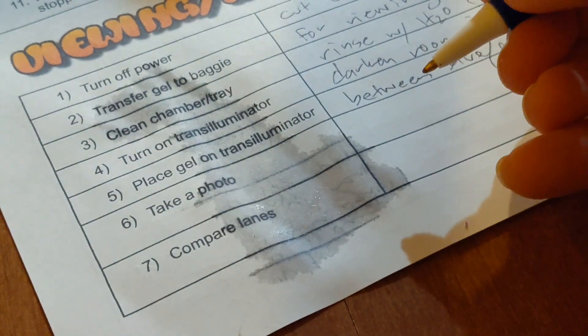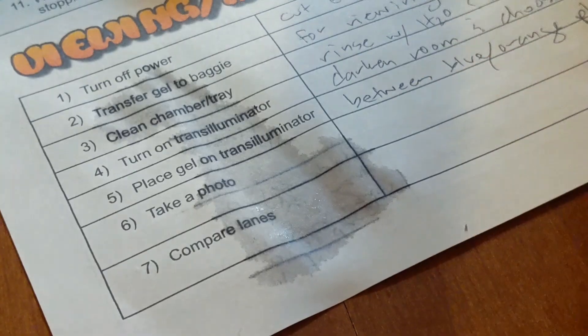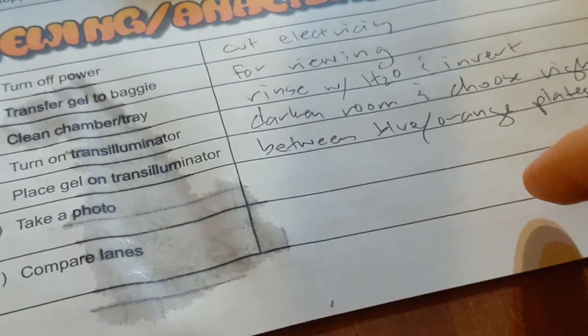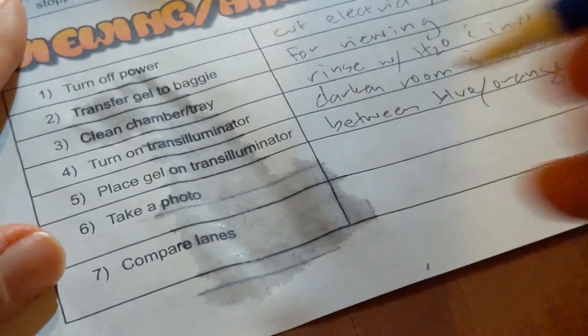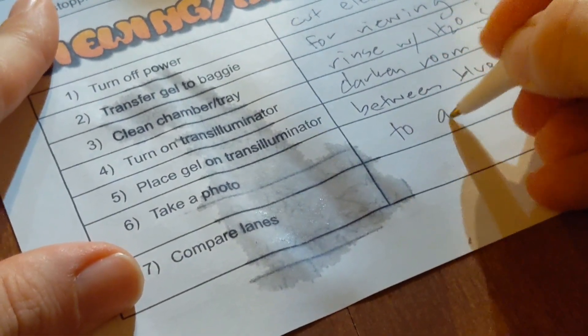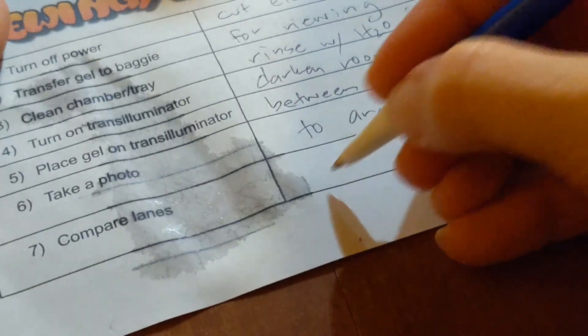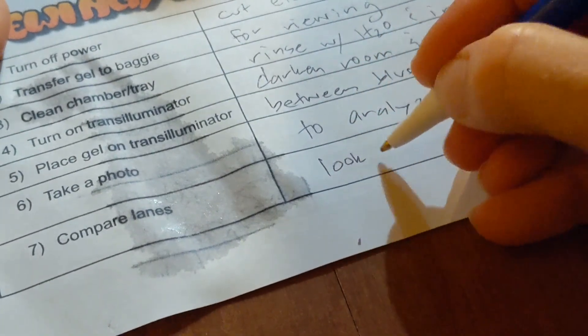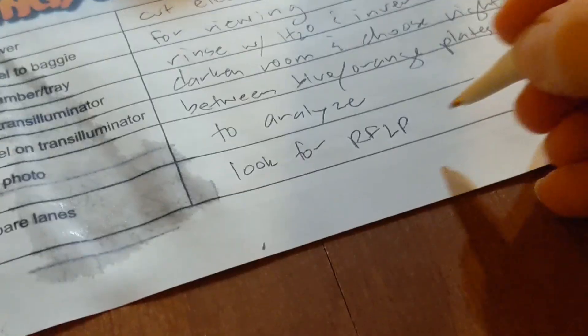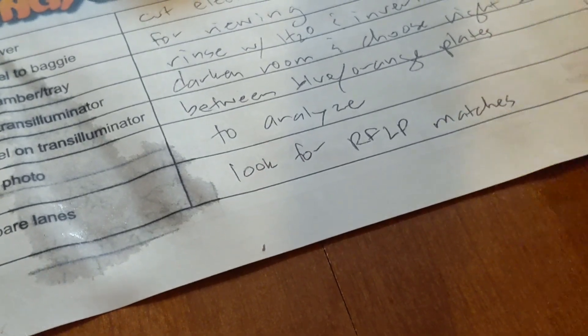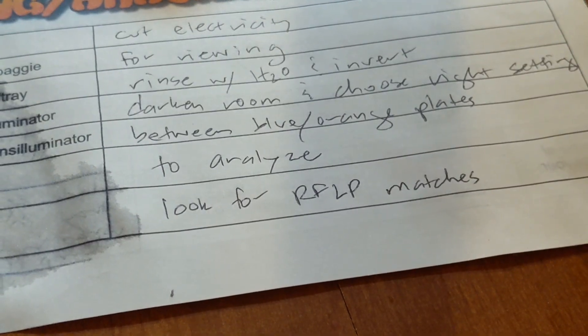Take a photo. So you definitely want to take a photo with your camera so you can analyze it later. Our classroom only has one Trans Illuminator, and there's lots of gels. So you take a picture, and then you just analyze the picture instead of the gel itself, and you make room for the next team. So I'll say to analyze and compare lanes. Like I said, we could compare to the standard. Generally, we are looking for r-flip matches. So if you have the same number of r-flips and they're in the same place, then the DNA could be a match.